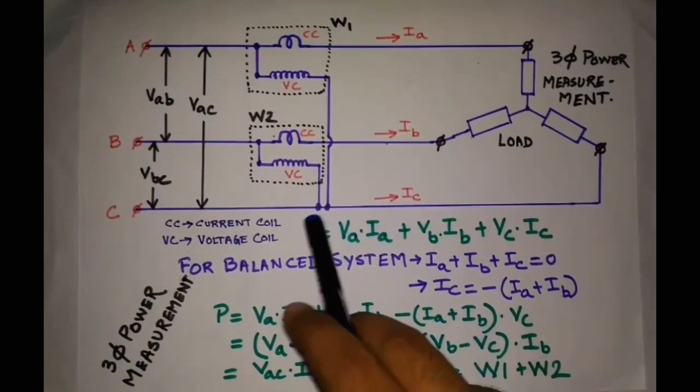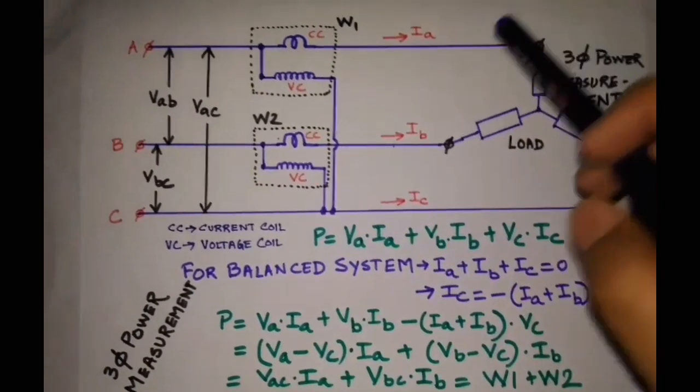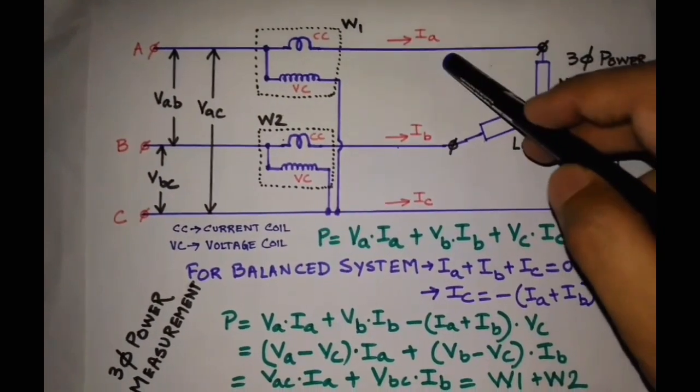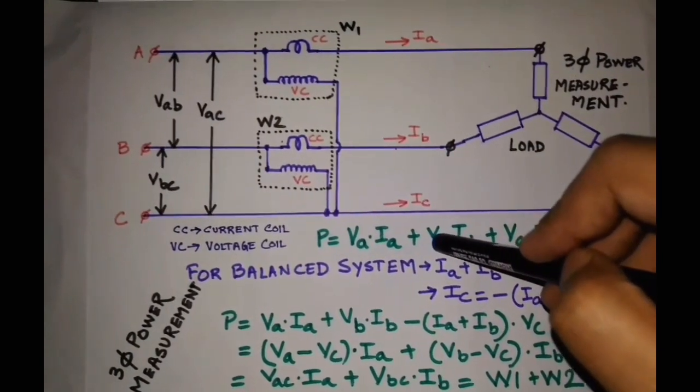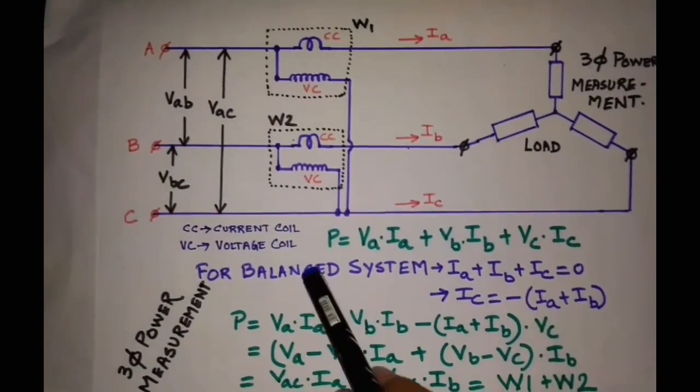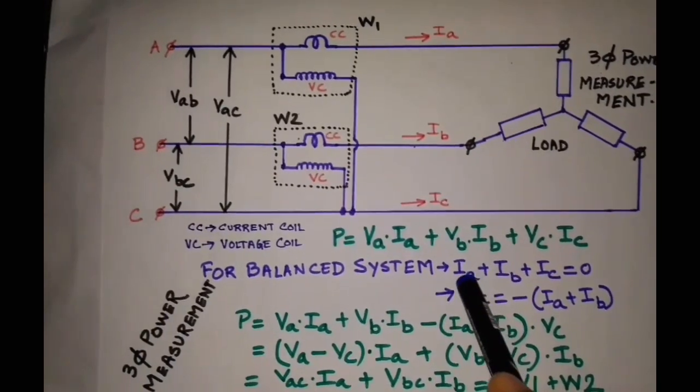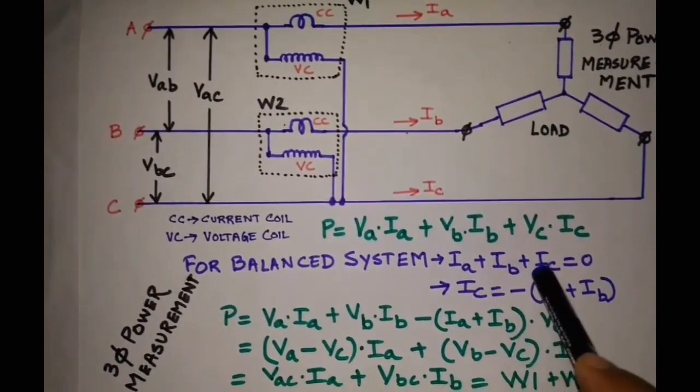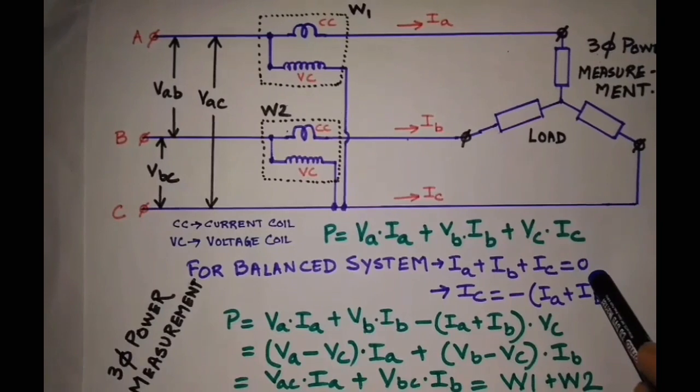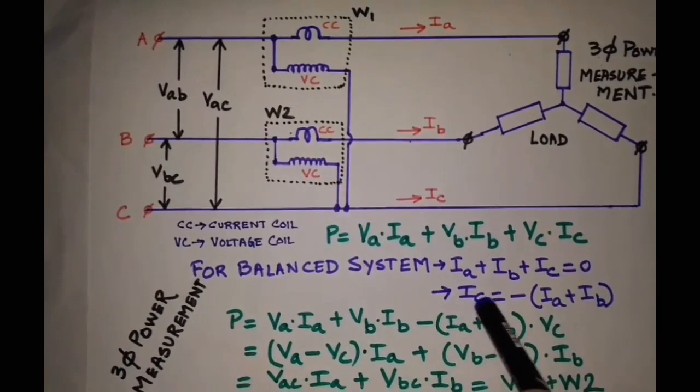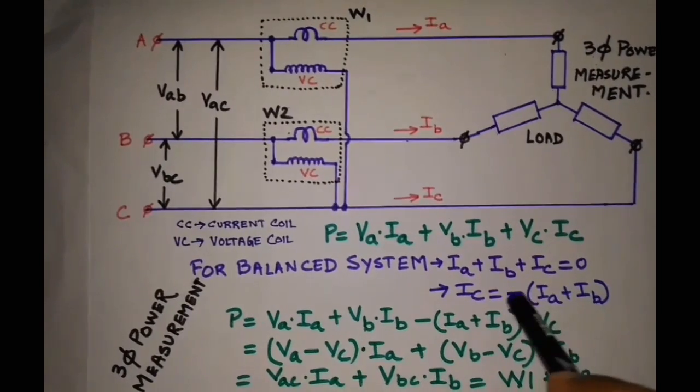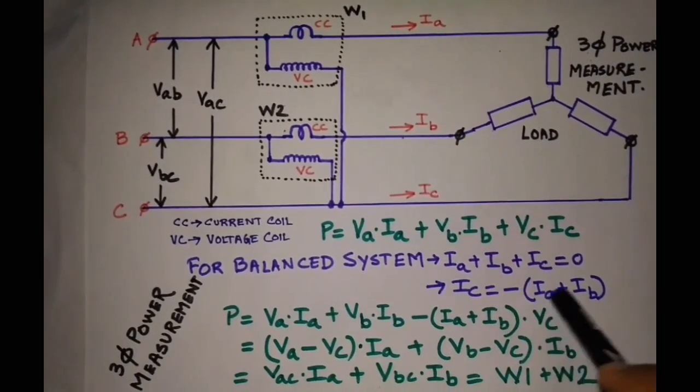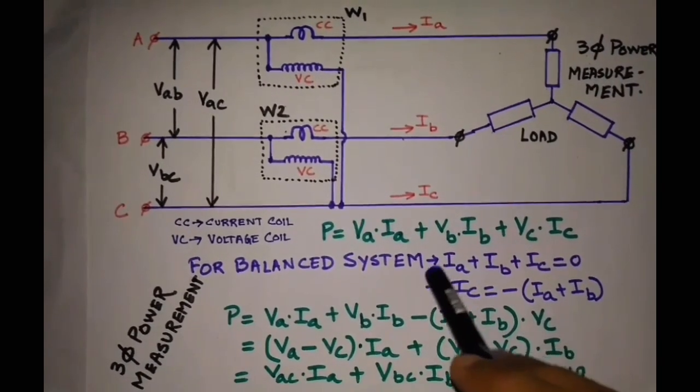So this is our total power. Now as I said earlier, Ia, Ib, and Ic vector sum of these three will be zero for a balanced supply. So we can write for balanced system, Ia + Ib + Ic = 0. So Ic will be -(Ia + Ib).